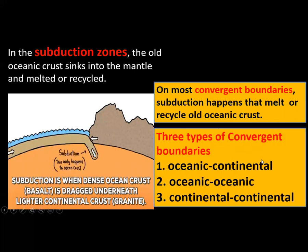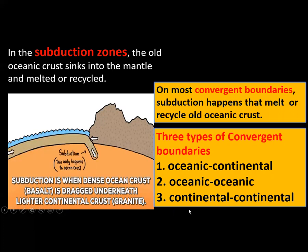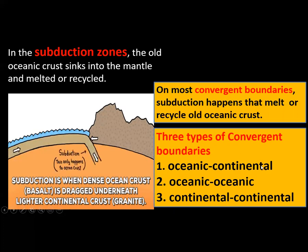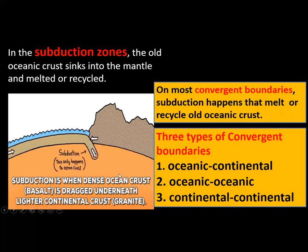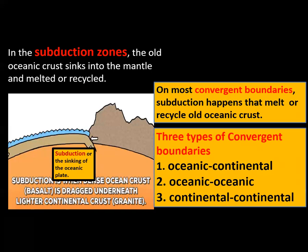This is why Earth is not growing — whatever is added in the Atlantic Ocean through the mid-ocean ridge is being removed from the Pacific Ocean through subduction. There are three types of convergent boundaries: oceanic-continental, oceanic-oceanic, and continental-continental. Remember, oceanic crust is the denser, heavier one, while continental crust is lighter — that's why the oceanic plate subducts. Subduction is also known as the sinking of the oceanic plate.